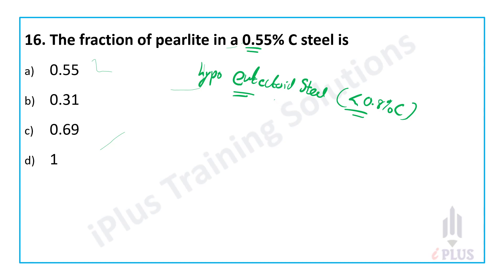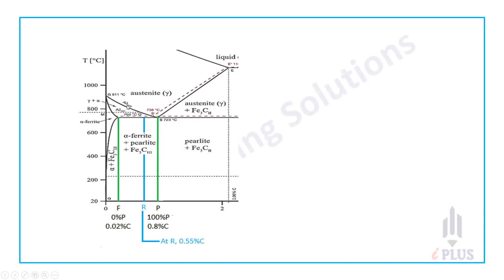Now applying the lever rule in the iron-carbon phase diagram. In the iron-carbon diagram, we have hypoeutectoid steel lying between 0.02% carbon and 0.8% carbon. The eutectoid or pearlite point is at 0.8% carbon. Taking a steel composition of 0.55% carbon, it falls in a combination of pearlite plus cementite. The pearlite line corresponds to 0.02% carbon.